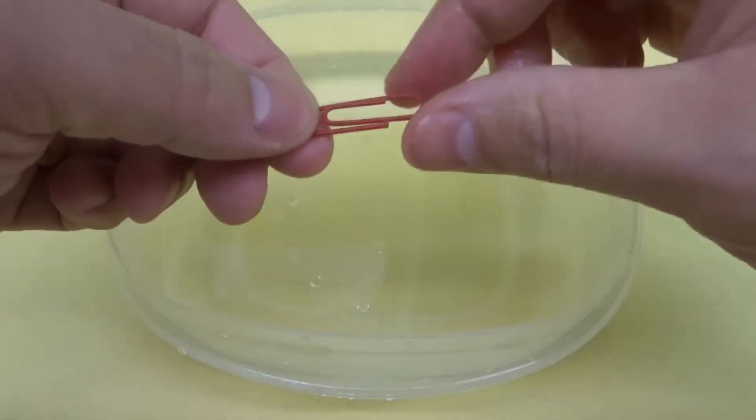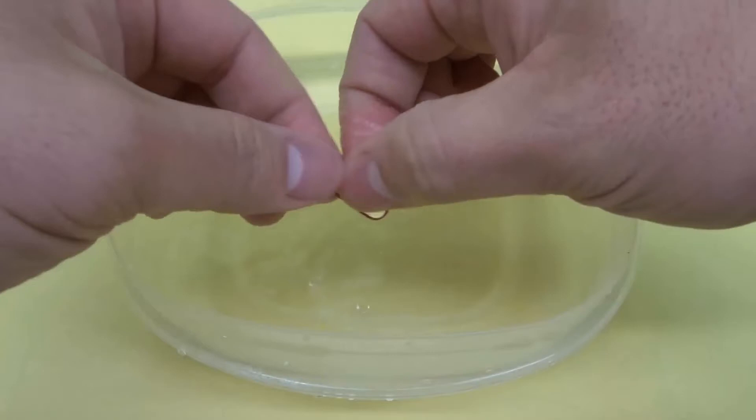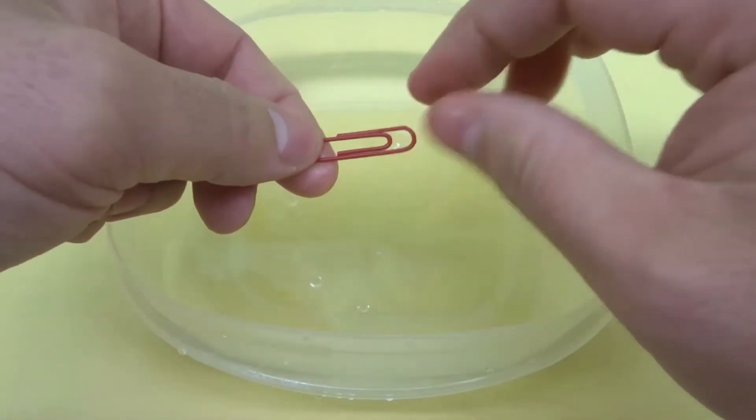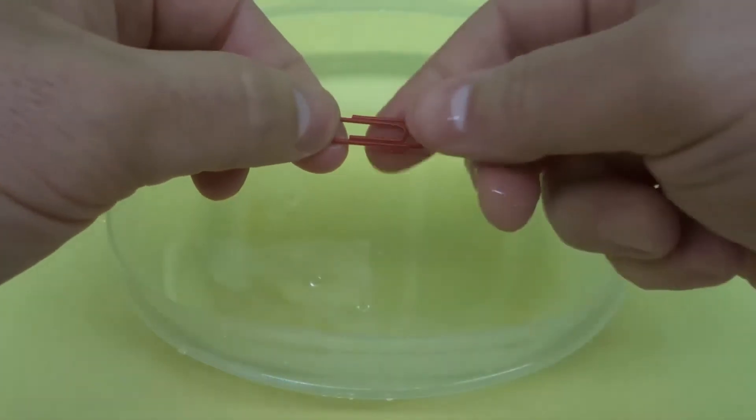We're going to make this paperclip sit on the water. So once again it just falls there, right? But we're going to make the paperclip sit on the water by gently placing it on the water. And because of the shape of the paperclip it's going to be able to float on top. It's really cool.